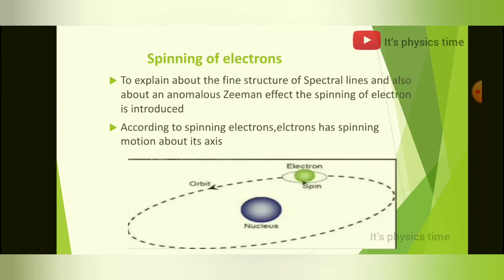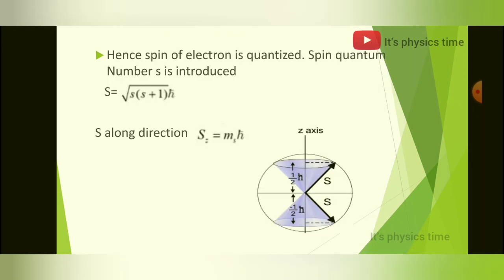The next feature is the spinning of the electron. The spinning of the electron explains the fine structure of spectral lines and also the anomalous Zeeman effect. The electron rotates on its own axis — this picture shows the electron's spin. The spin of the electron is quantized, and hence the spin quantum number s is introduced. In spinning of the electron, there is a quantization of spin angular momentum in both magnitude and direction.